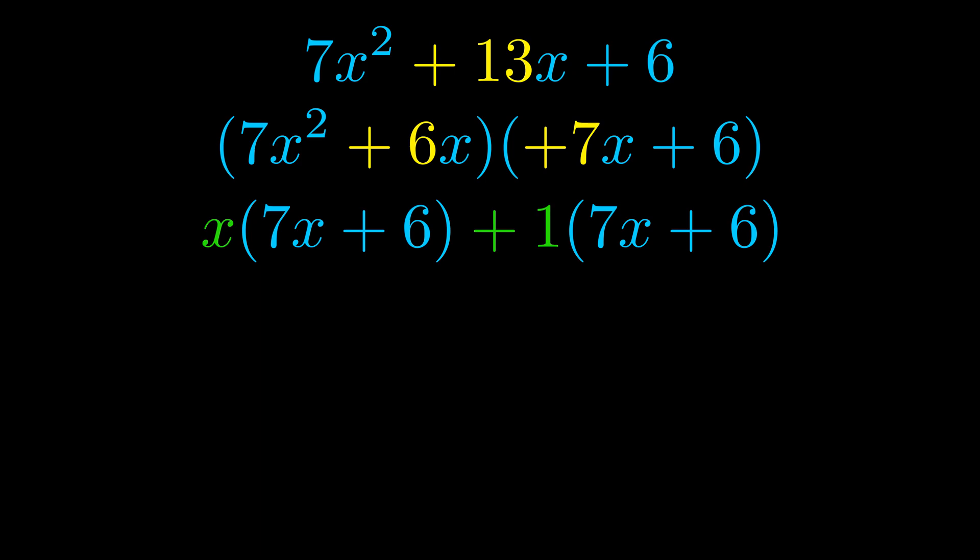Notice also how what remains inside of the parentheses is the same in both cases. The blue values are the same. Those blue values will become one of our factors and we will combine the two green values, the GCFs that we pulled out, to get the other one. And that is our fully factored equation.